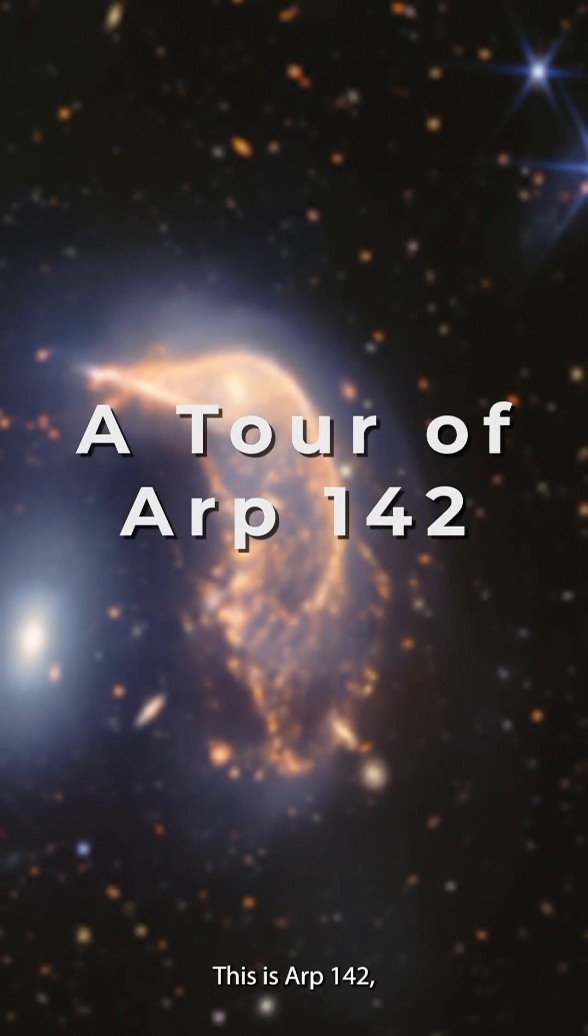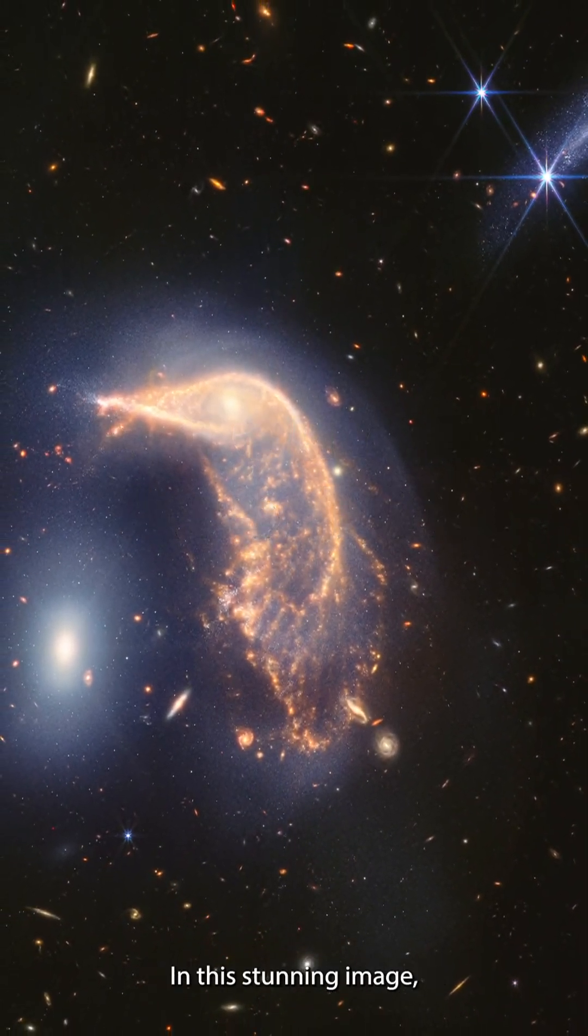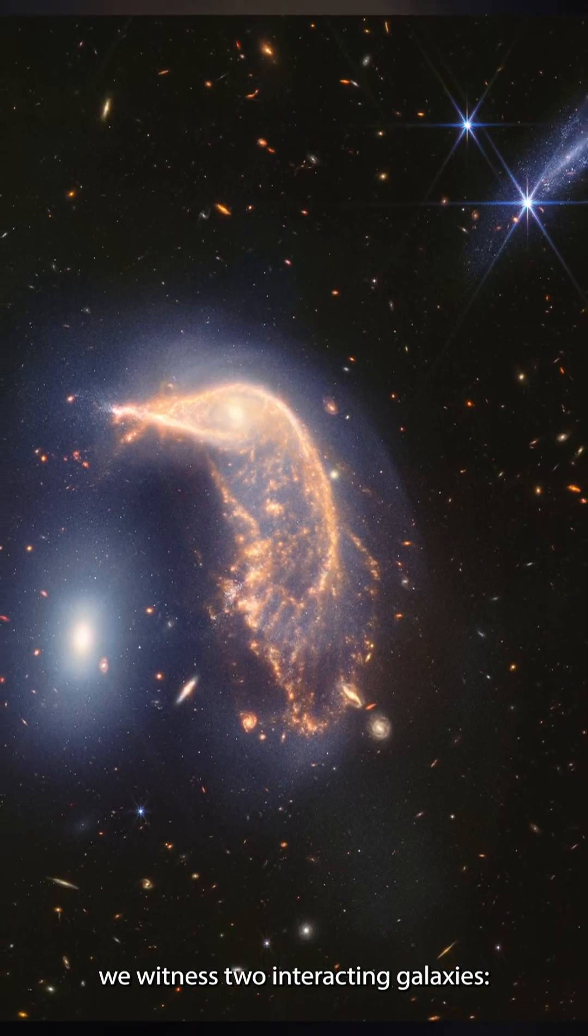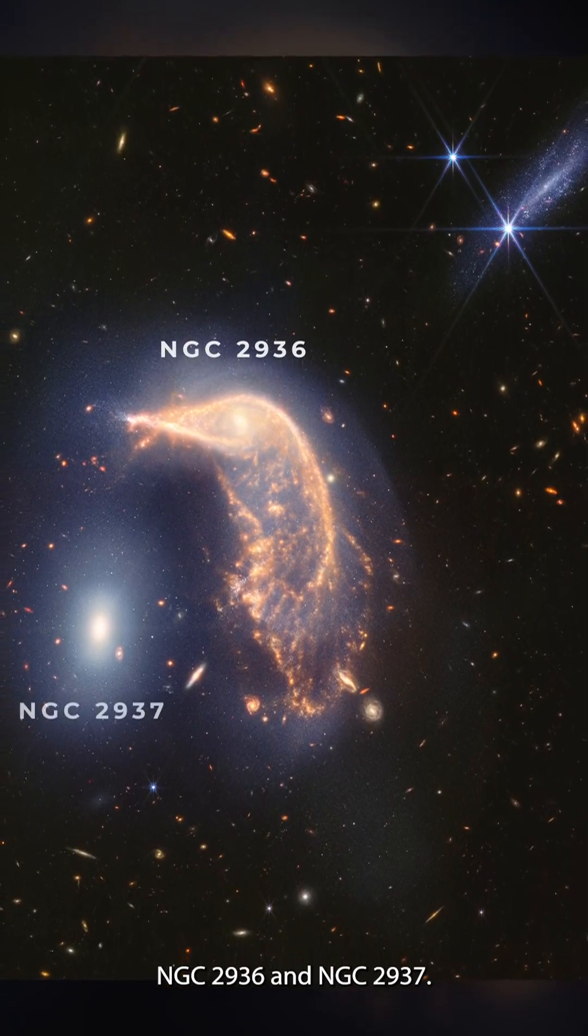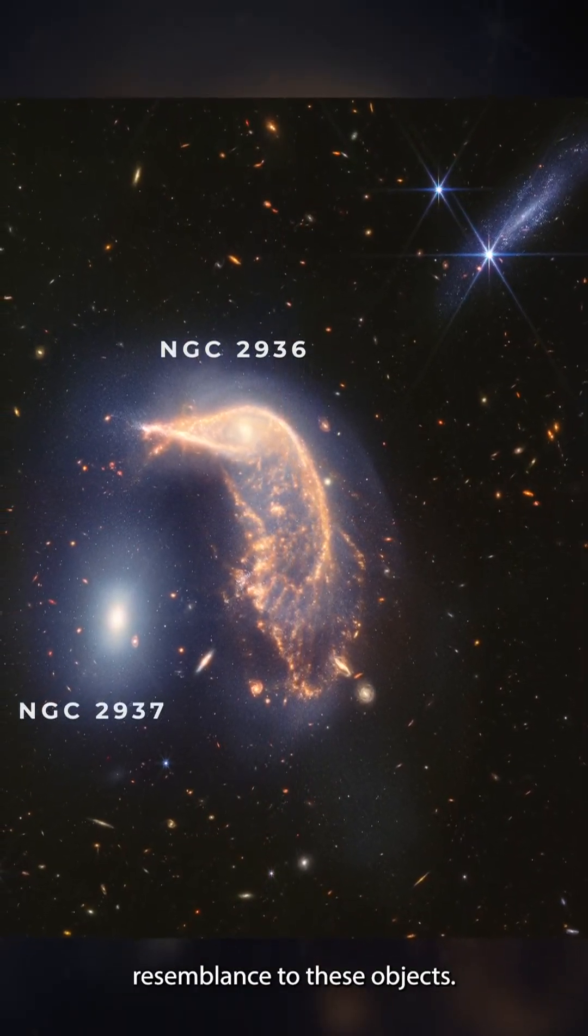This is Arp 142, also affectionately known as the Penguin and the Egg. In this stunning image, we witness two interacting galaxies, NGC 2936 and NGC 2937. The nickname comes from their remarkable resemblance to these objects.